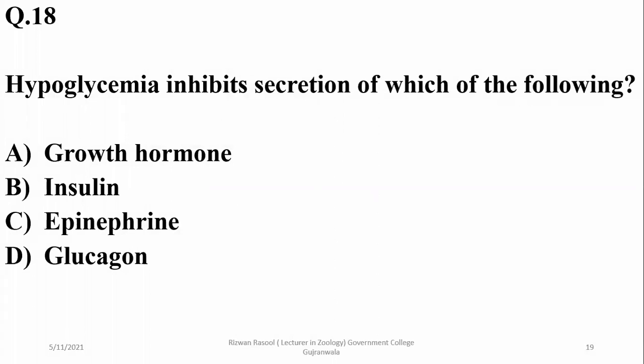Hypoglycemia, or low blood glucose level, inhibits secretion of which of the following? It will inhibit the secretion of insulin, because we know insulin decreases blood glucose level, and high blood glucose level is the stimulus for insulin release — not hypoglycemia. So the right option is B.